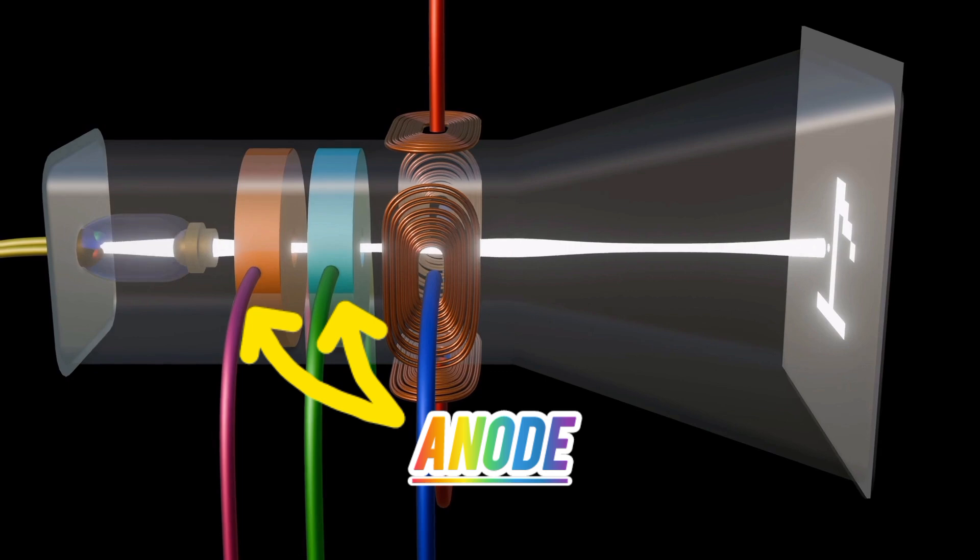The anode is positively charged, which attracts the negatively charged electrons emitted by the cathode. The anode is positioned further along the electron beam's path. The anode helps accelerate these electrons to very high speeds as they move through the vacuum tube. The stronger the positive charge on the anode, the faster the electrons will travel towards the screen.